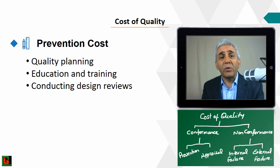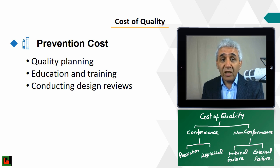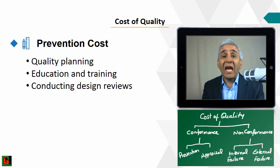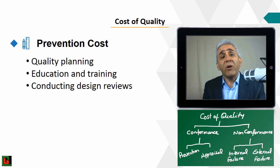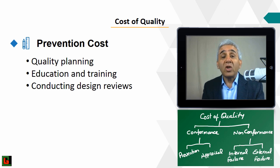Prevention cost is the cost to prevent problems and defects. We prevent defects through proper planning, education and training, design reviews, and other activities. Establishing a quality management system or performing capability analysis — making sure you know what your machines are capable of — also falls under prevention cost. Any cost that helps avoid a defect at the very first place is a prevention cost.